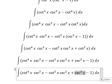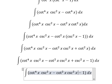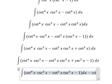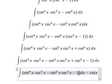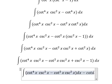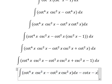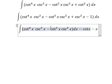So the integration of this one, we have negative cotangent x. The integration of negative one, that is negative x. Now we just concentrate on this one.